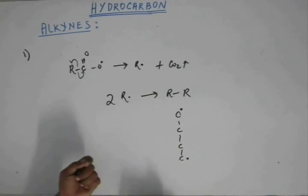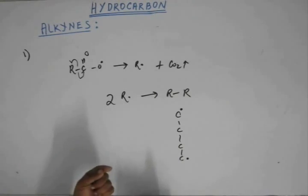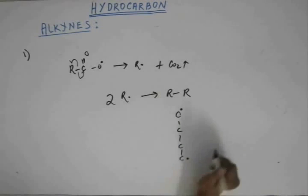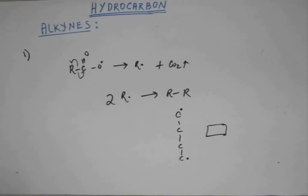And then because there are two free radicals within the same chain, there will be an intramolecular reaction and they among themselves will react. And when they form a bond among themselves, there will be a closure of the ring. So, a four member ring will be formed like this. This is what we studied in Kolbe's electrolysis.